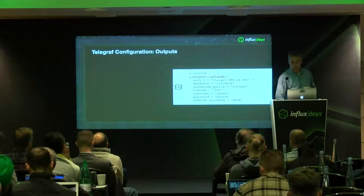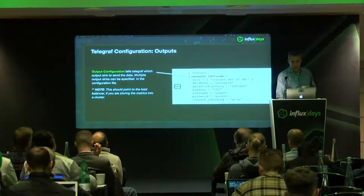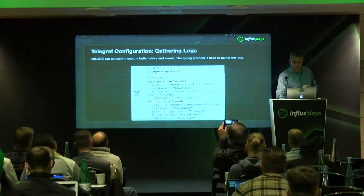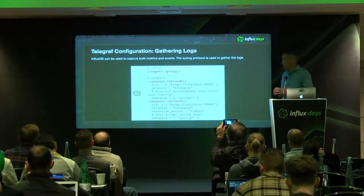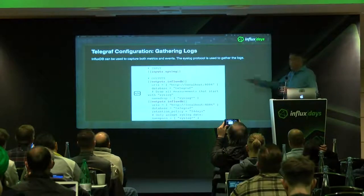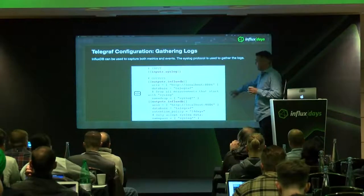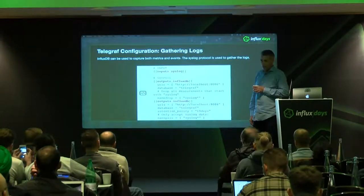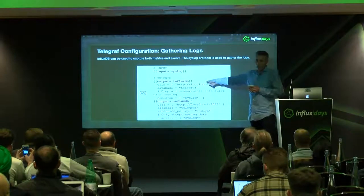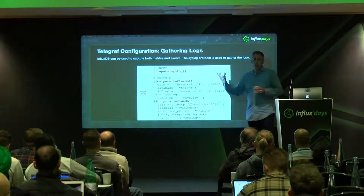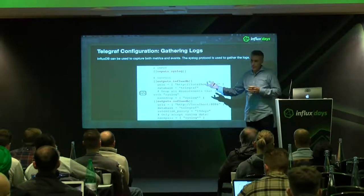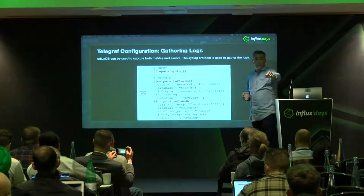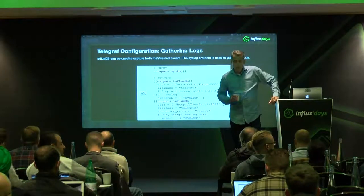From an output perspective, we're sending it all to our monitoring cluster — super simple setup. For gathering log information, we're routing it to a different database. I've got my metrics collection for Telegraf, and I'm dropping all measurements that start with 'syslog' — anything with that name doesn't go into the metrics database. I'm routing that to a separate database so I can control the retention policy and periods differently than the metrics. If I want metrics for 30 days and logs for 5, I can dial that in.